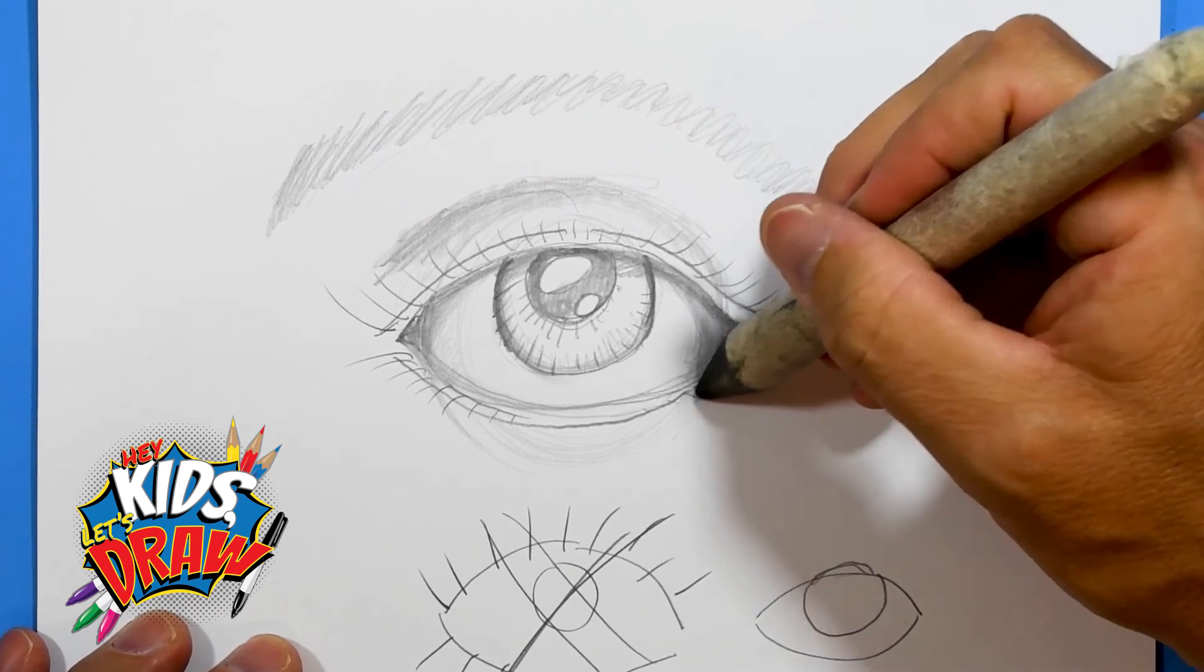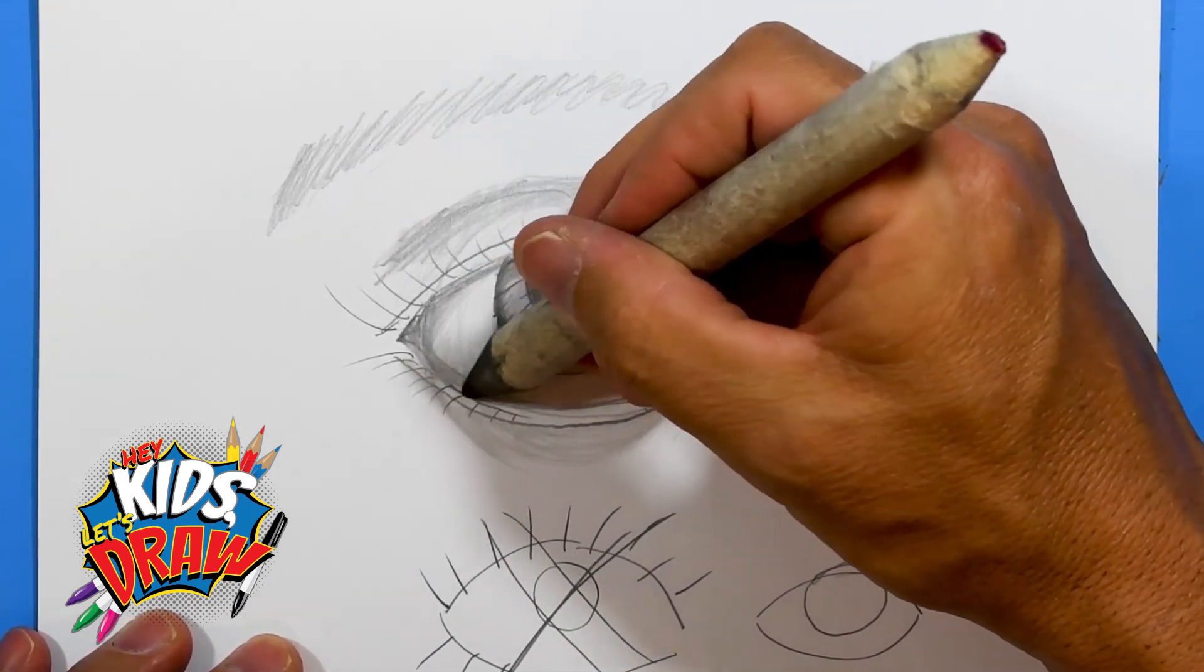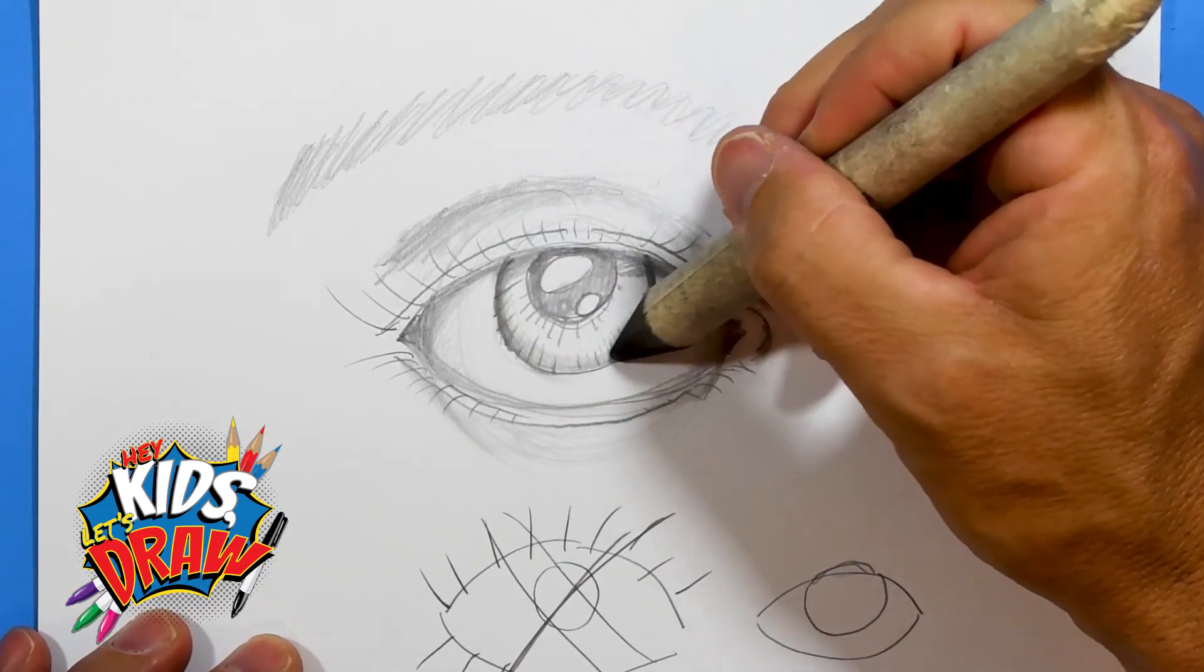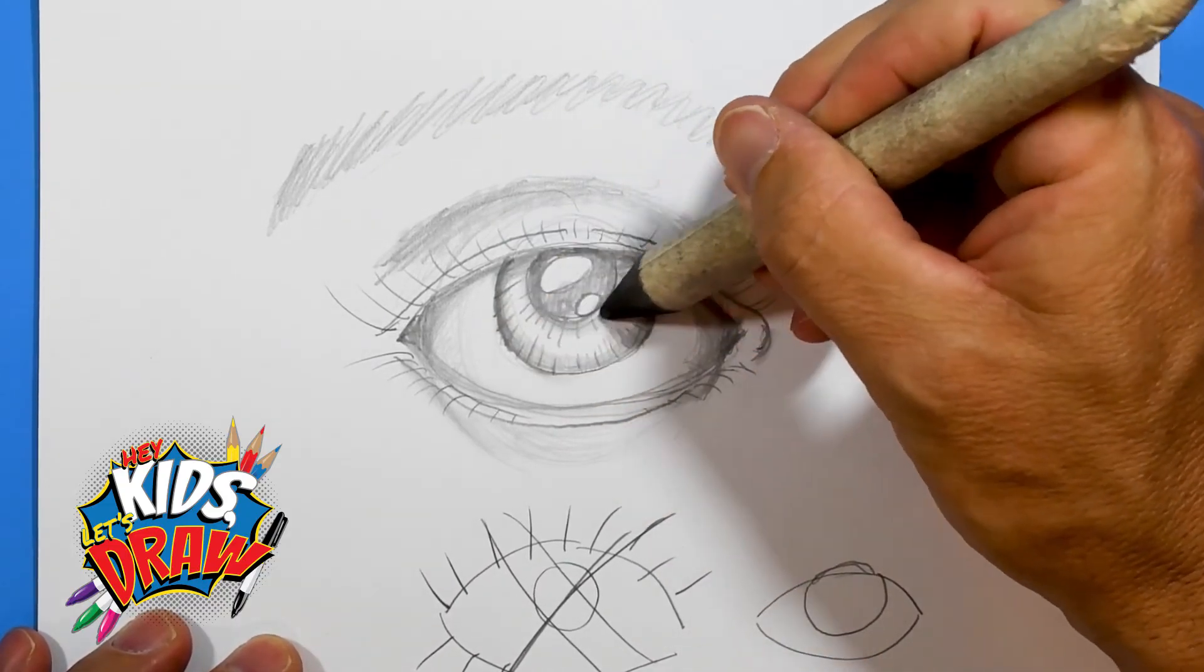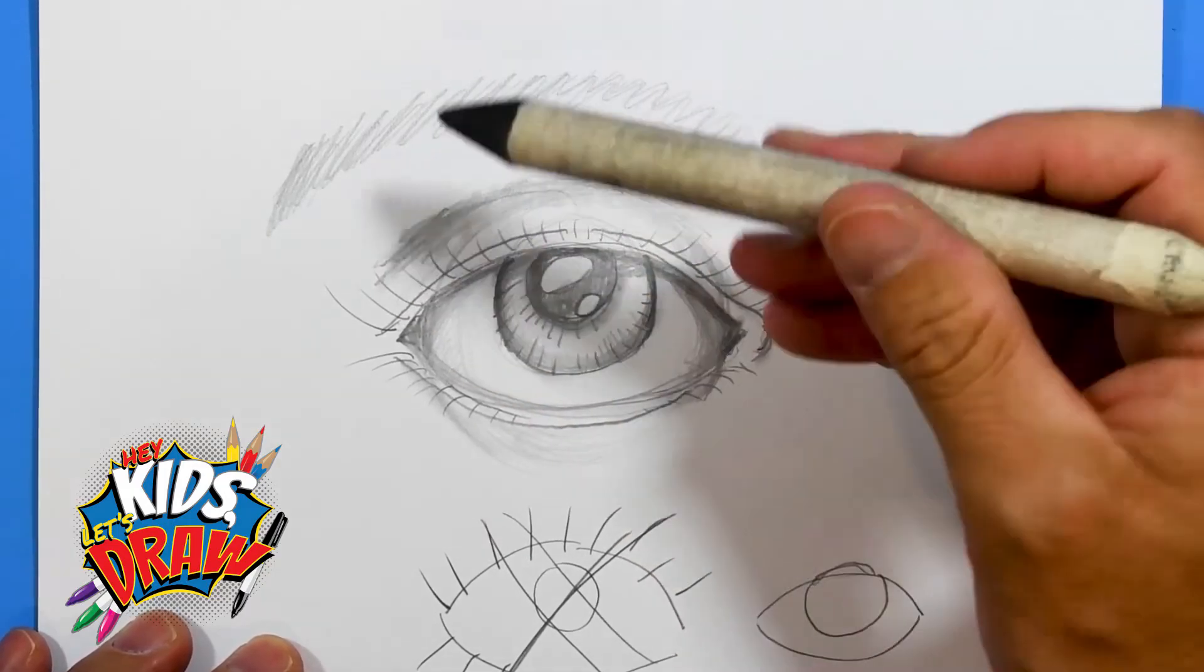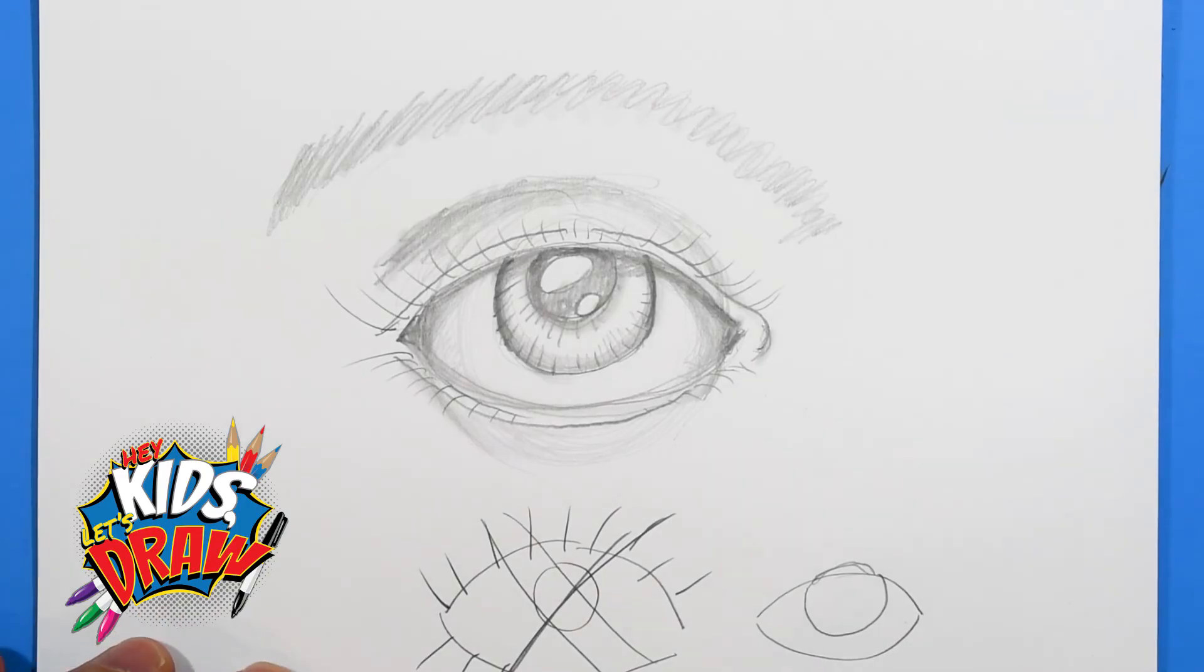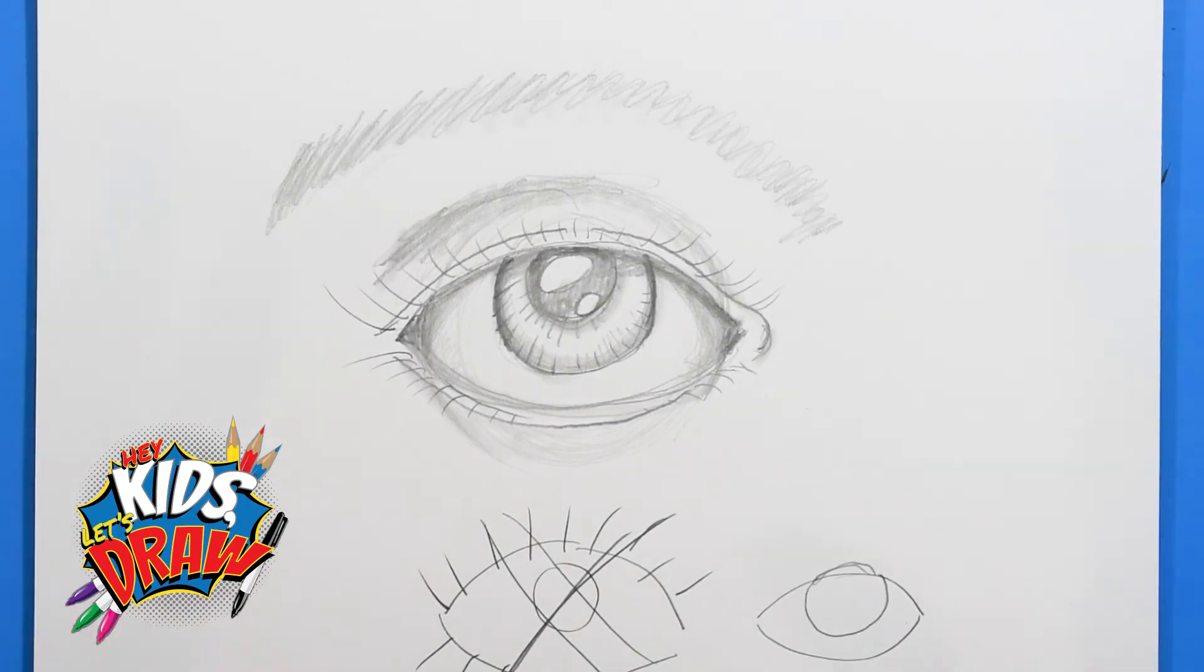The best thing to do is look at your eye in the mirror or look at someone else's eye and just observe what it looks like and practice drawing over and over. So that's the basic of an eye. It's not perfect, but what we did really quick: